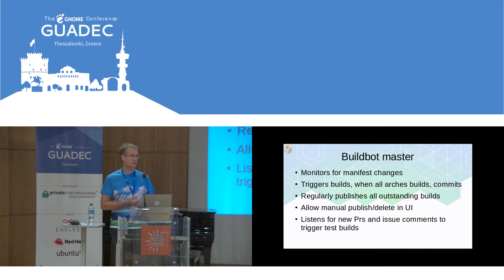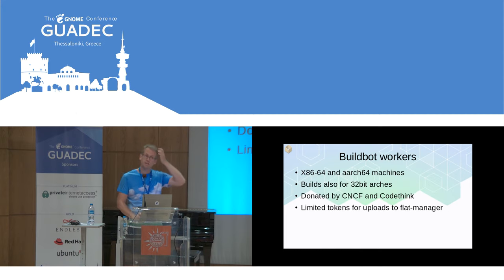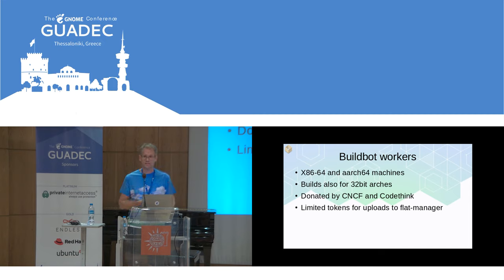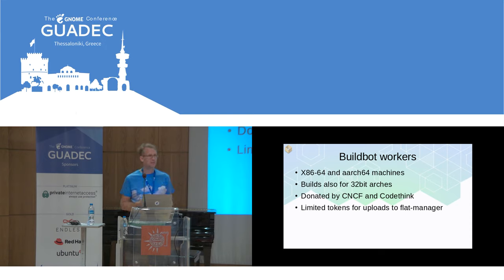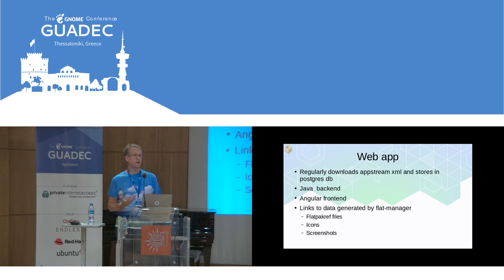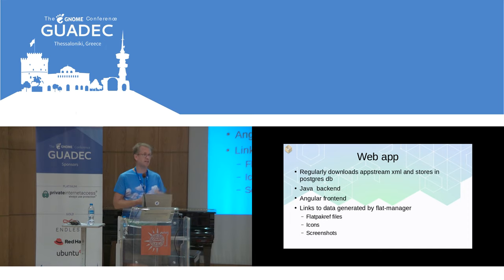If you tested it and it turns out it doesn't work, you can delete it before it gets published. We have x86 and ARM builders donated by CNCF and Codethink. The CNCF machines are huge — the ARM64 one is a 64-CPU monster. They also build for 32-bit so they get a lot of work out. The web app basically downloads the AppStream data regularly and inserts it into a Postgres database, then there's a Java backend that exposes a JSON API, and the frontend is an Angular app that shows the data. Various things in the UI are links to stuff that flat-manager generates, like screenshots and Flatpak ref files for one-click installs.